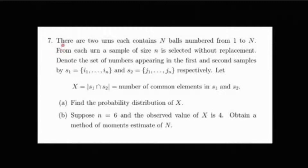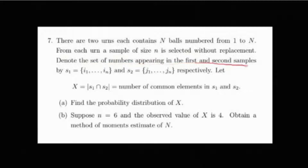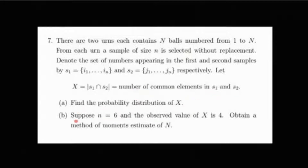The problem states that there are two urns, each containing n balls numbered 1 to n. From each urn a sample of size n is selected without replacement. The set of numbers in the first and second samples are denoted S1 = {i1,...,in} and S2 = {j1,...,jn}. Let X denote the size of S1 ∩ S2, i.e., the number of elements common to both samples. We must find the probability distribution of X, and for the second part, given n=6 and observed X=4, obtain a method of moments estimate of N.